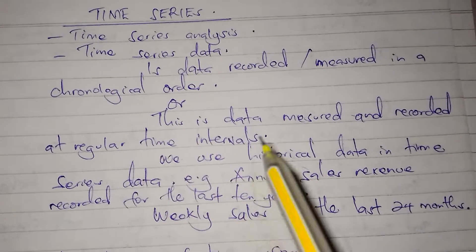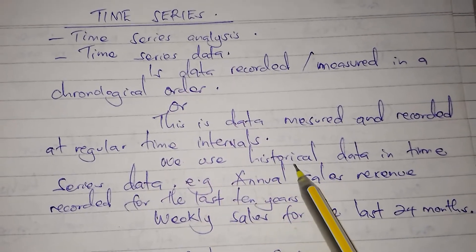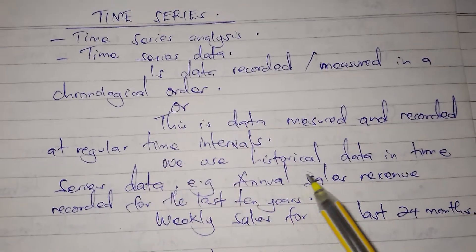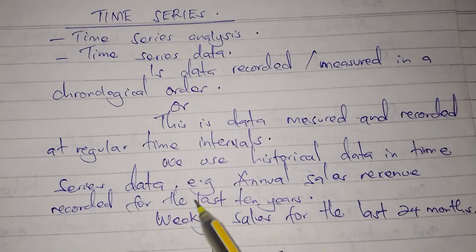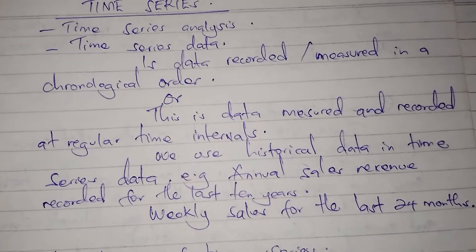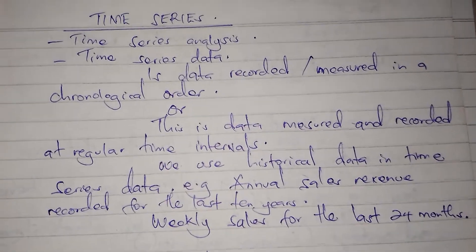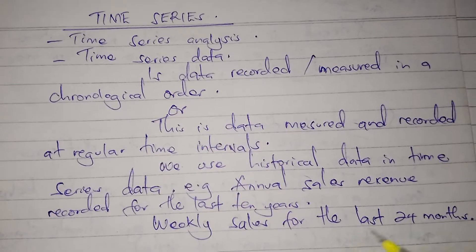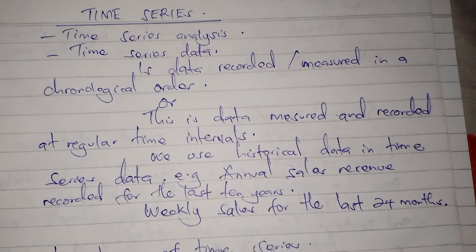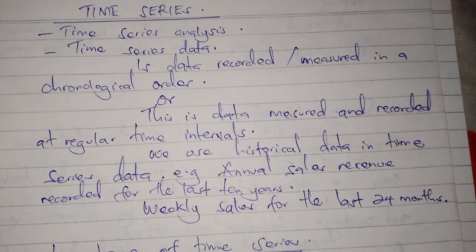This data is measured and recorded at regular time intervals. We use historical data in time series — data of the past. For example, annual sales revenue recorded for the last 10 years, or weekly sales for the last 24 months. Time series refers to data recorded in a chronological order, like every year, every week, every month, or every day.